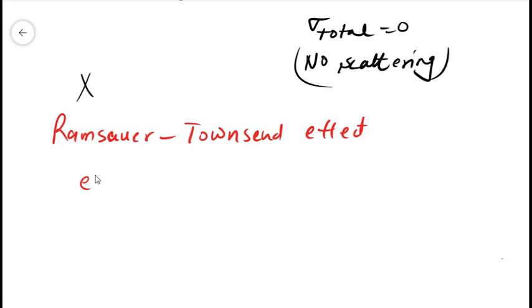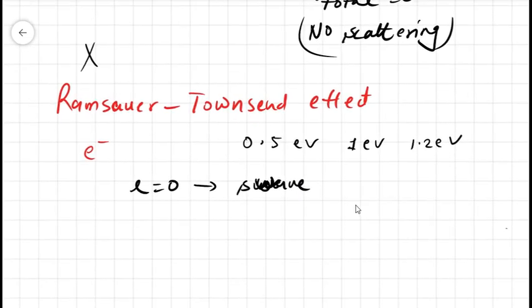If the electrons are of extremely small energy something like 0.5 electron volt or 0.1 electron volt or 1.2 electron volt, then only the l=0 wave—the l=0 wave means the S wave—would only suffer some change in its phase after scattering.